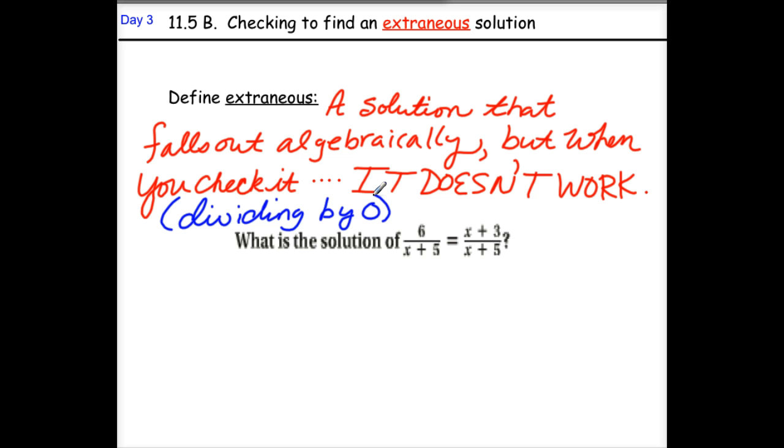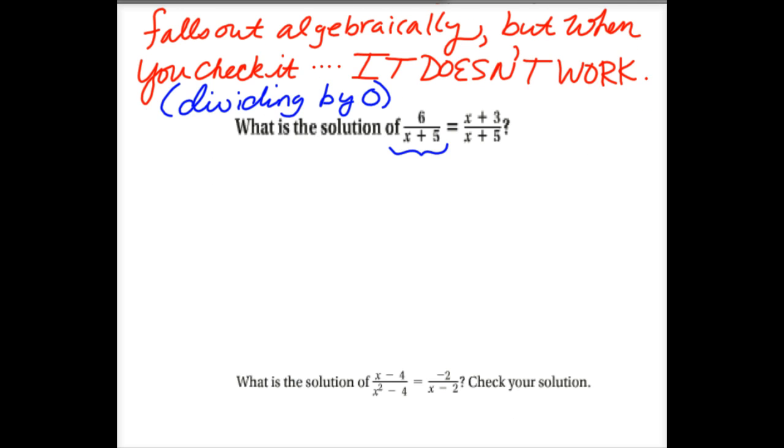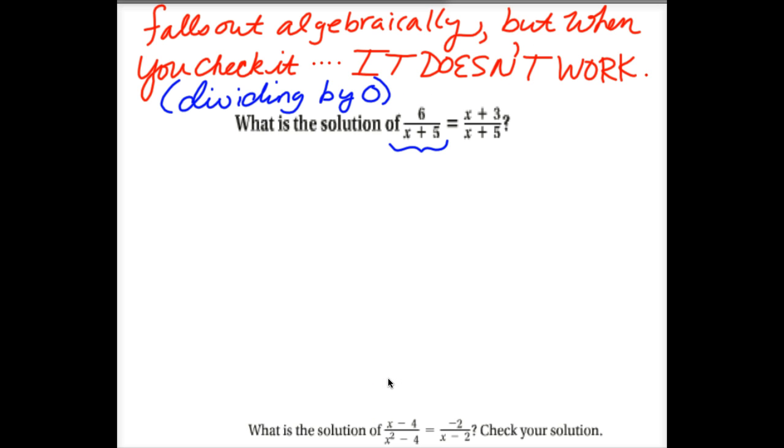So an extraneous solution is one that would make us divide by zero. We plug it in, and in today's situation, we end up dividing by zero. Let me look ahead at what's going to happen. We're going to solve this, check our solutions, and if they make us divide by zero, we say it's out. What might be an extraneous solution for us? If x plus five is zero, it means that x would be negative five. So if negative five is one of my solutions, I'm going to have to throw it out.